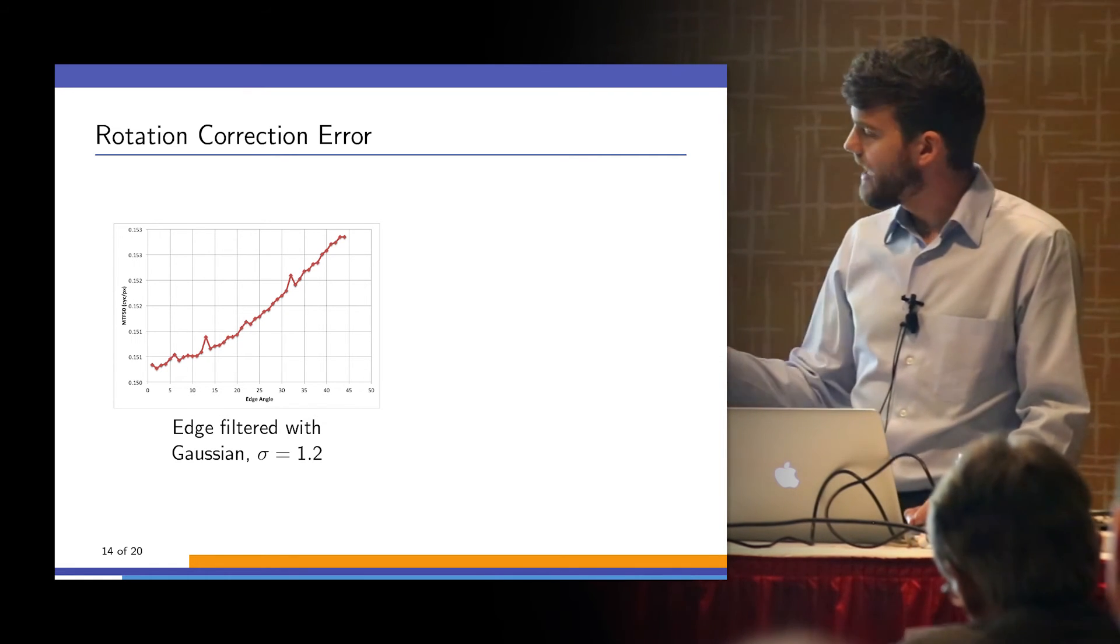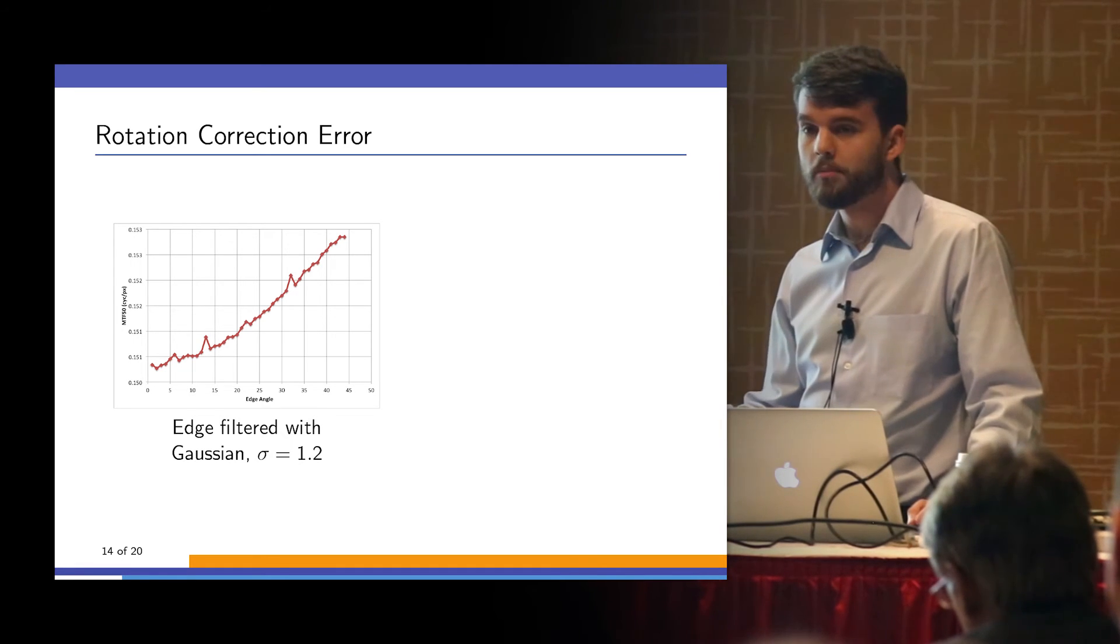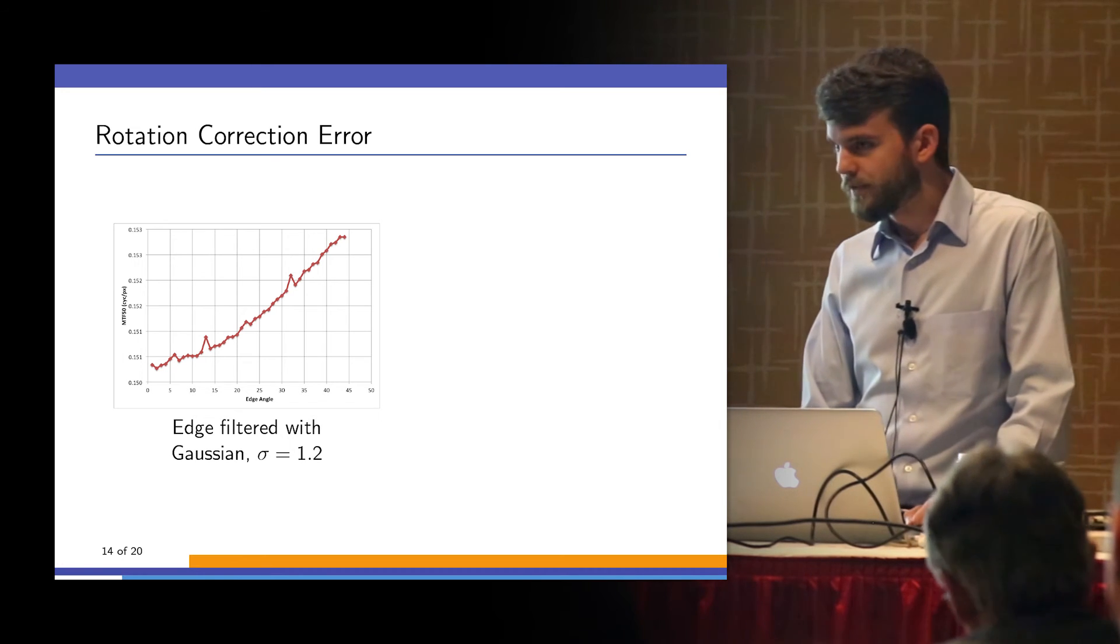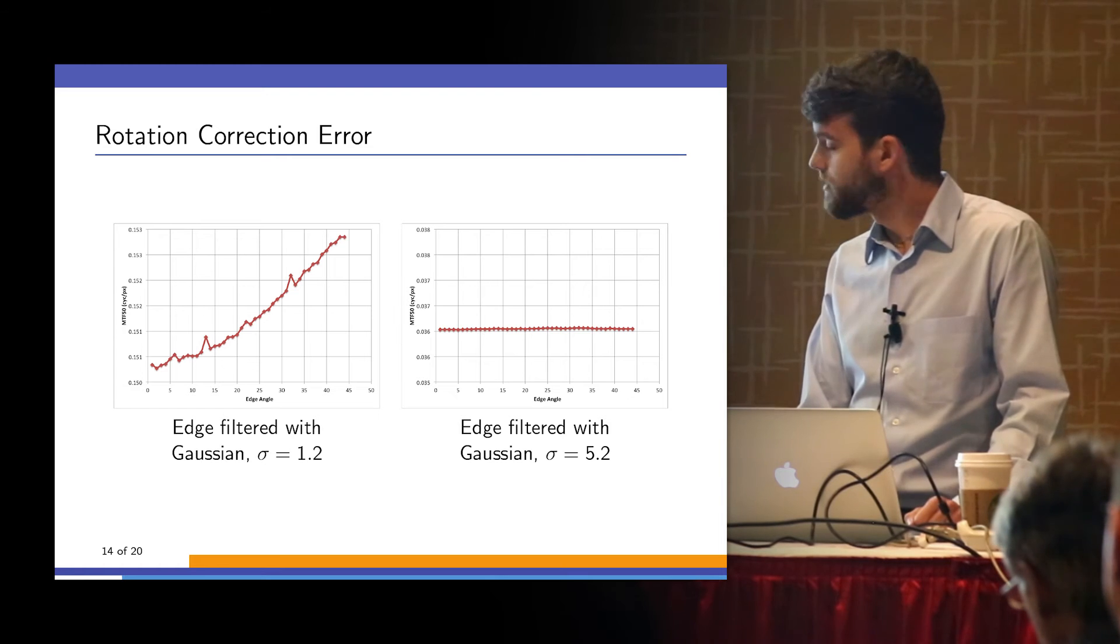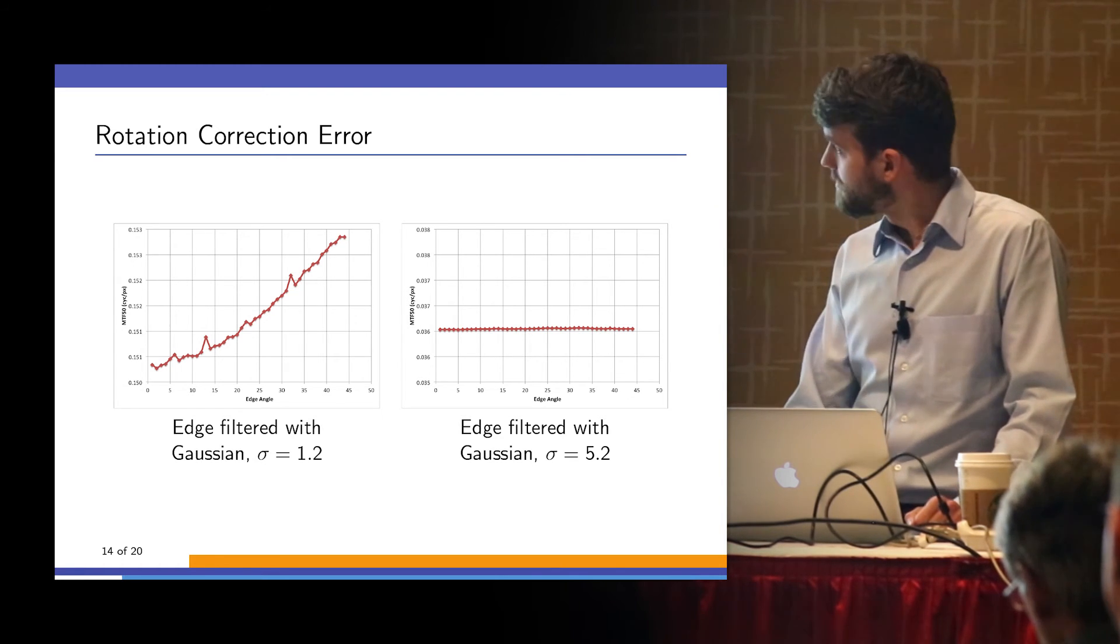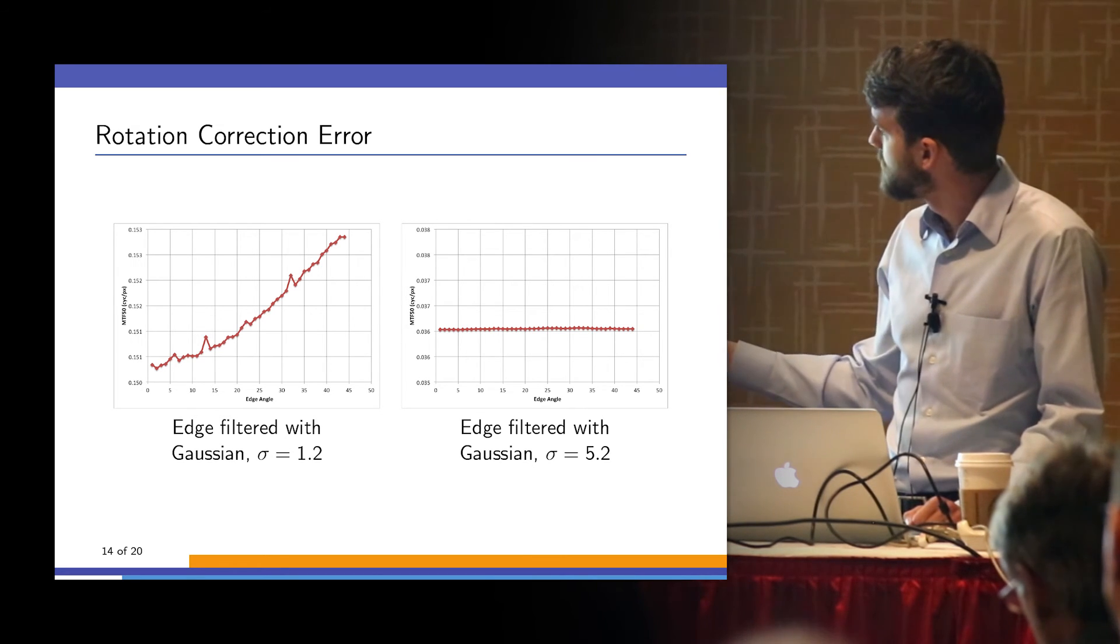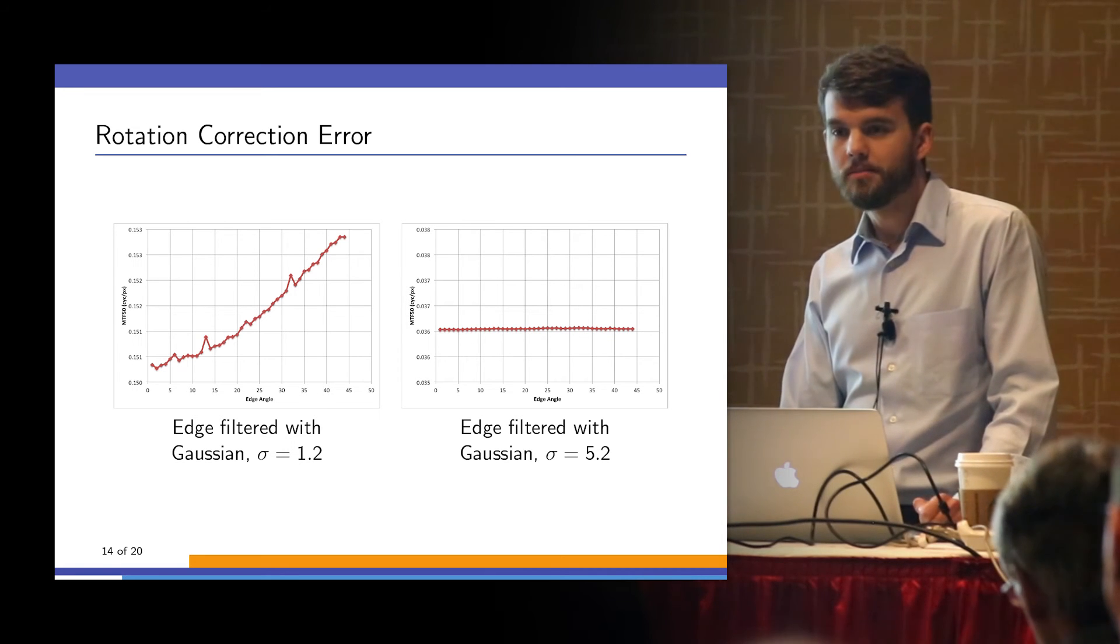Here is that same red line expanded so we can see in more detail what's happening. This simulated edge has been filtered with a Gaussian with a sigma of 1.2. We discovered after some playing around that if you filter that with a Gaussian with a larger sigma value, the differences go away. Your error disappears.